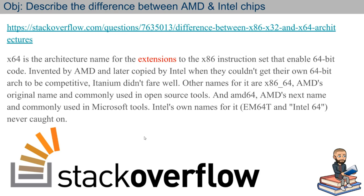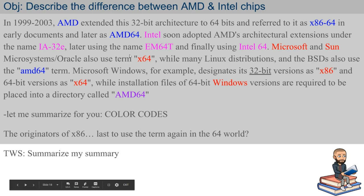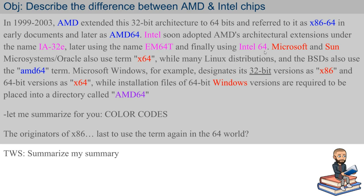A Stack Overflow discussion says x64 is the architecture name for extensions to the x86 instruction set that enable 64-bit code. It was invented by AMD and later copied by Intel when they couldn't get their own 64-bit architecture — IA-64/Itanium — to be competitive. AMD called it x86-64 originally, then AMD64. Intel tried IA32E, then EM64T, then Intel64, but apparently these names never caught on.